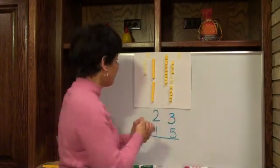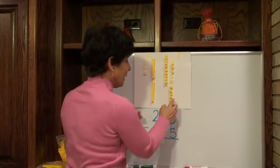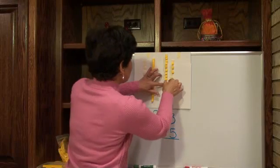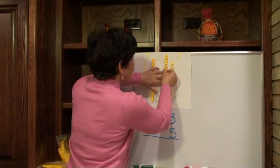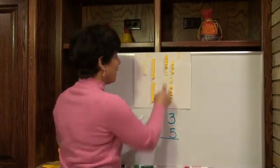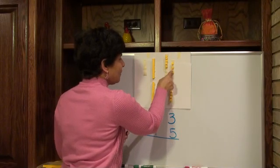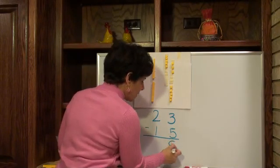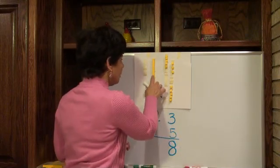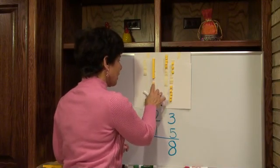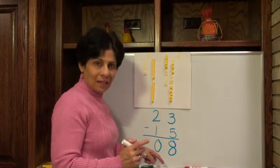Now we have enough to take away. If you have thirteen ones over here and you have to take away five, we can do that. Let's see what we have left here. We take away five. So what do we have left? Eight ones. That's your ones place. You have eight ones left. And you have one long, you take away one long. Or you have one ten, you take away one ten. What do you have left? Zero. So your answer is eight.